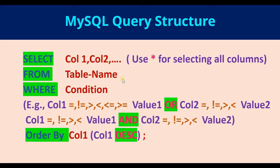Supposing we want to select certain rows based on a condition, we can use the WHERE keyword. So we could say SELECT column names FROM the table WHERE a particular condition is satisfied. The condition could use operators such as equals, not equal to, greater than, less than, less than or equal to, or greater than or equal to a value. For multiple conditions, we can join them using OR or AND.